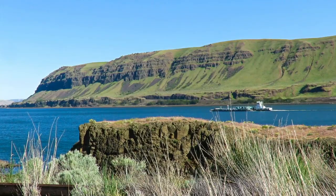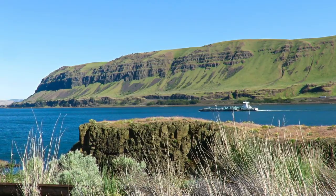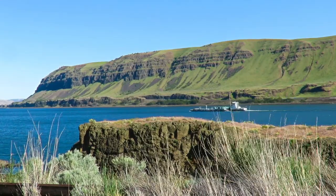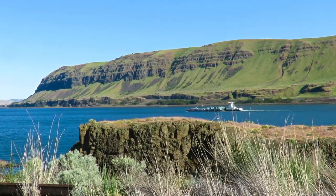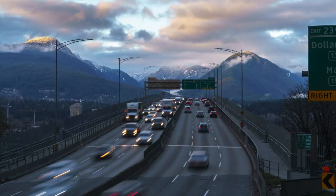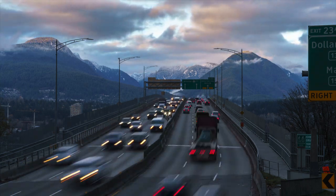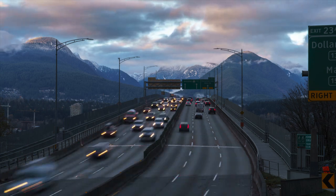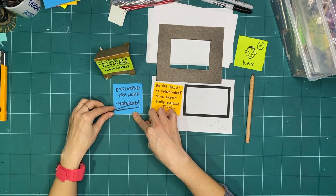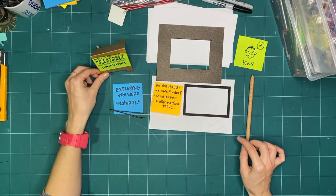A landscape is the visible features of an area of land, its landforms, and how they integrate with natural or man-made features, often considered in terms of the aesthetic appeal. Basically, they're usually described in aesthetics or how they look or how pretty or not pretty they are. Okay, so let's explore this word natural.